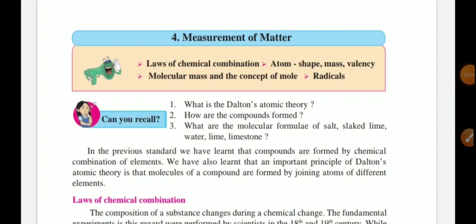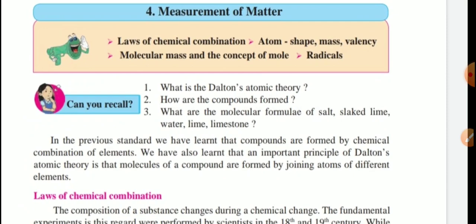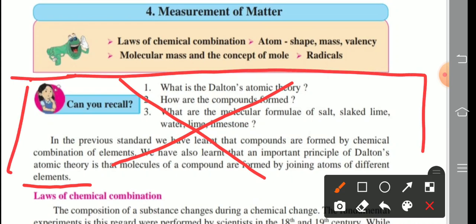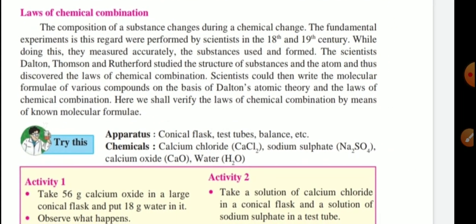Hello students, today we start the new lesson number 4: Measurement of Matter. The main points are laws of chemical combination, atom — its shape, mass and valency — molecular mass, concept of mole, and radicals. First of all, we check which parts are omitted from our syllabus. No questions will be asked on omitted parts.